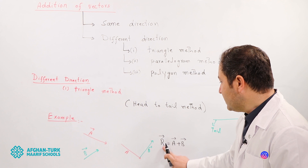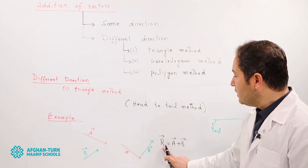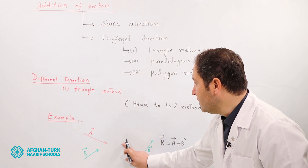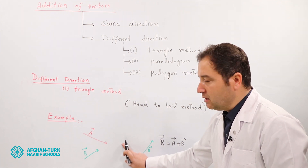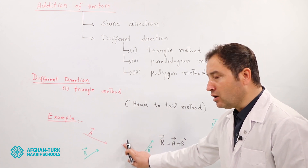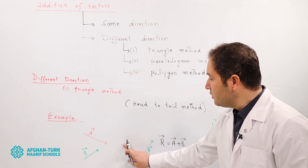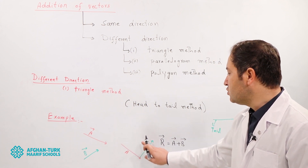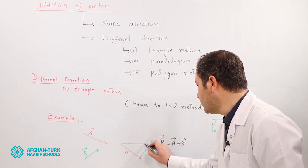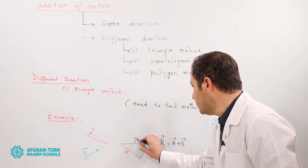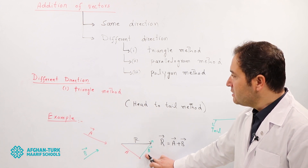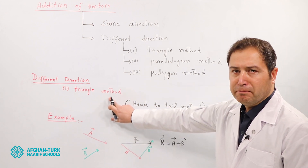The resultant vector is drawn from the tail of the first vector to the head of the last vector. This forms a triangle, which is why this method is called the triangle method.